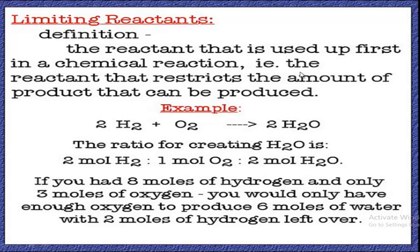The meaning of 'restricts the amount of product' is that from the amount of limiting reactant, the amount of product is determined. This is because a definite amount of reactant combines with other reactants, and when the limiting reactant is finished, the reaction ultimately stops. So the amount of product is calculated from the amount of limiting reactant.